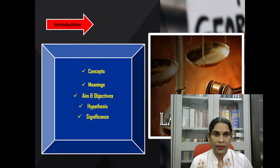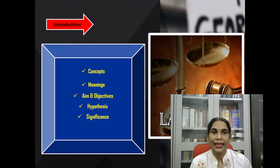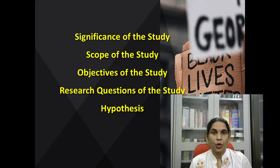For example, if the topic is the image of law, you have to prepare your concept, meaning, aims, objective, hypothesis and significance according to that topic. Then significance of the study, scope of the study, objective of the study, research questions of the study, and hypothesis.